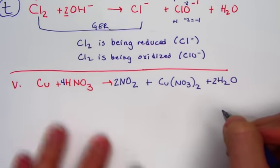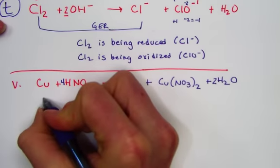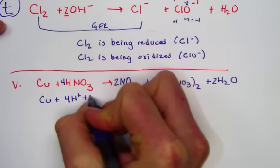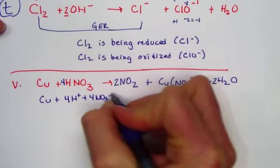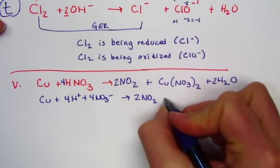Now, thinking about breaking apart any strong electrolyte, we would with the nitric acid, four hydrogen ions and four NO3 negatives. The two units of nitrogen dioxide stay together since it's molecular.